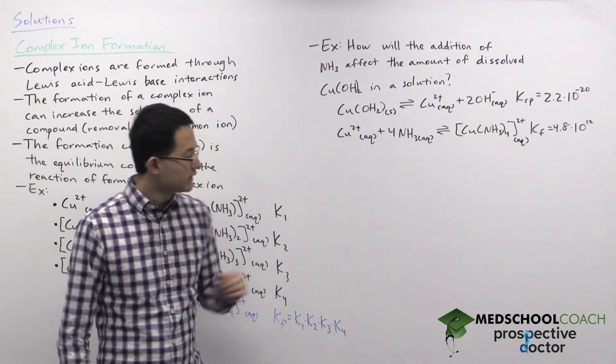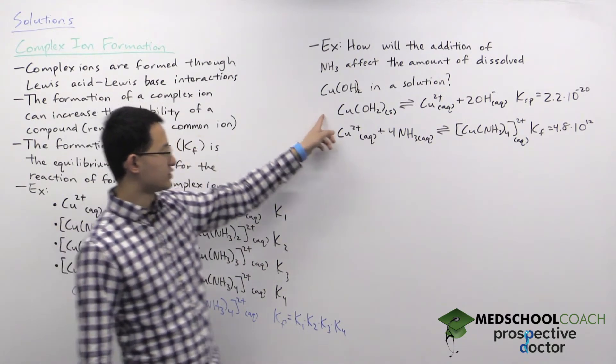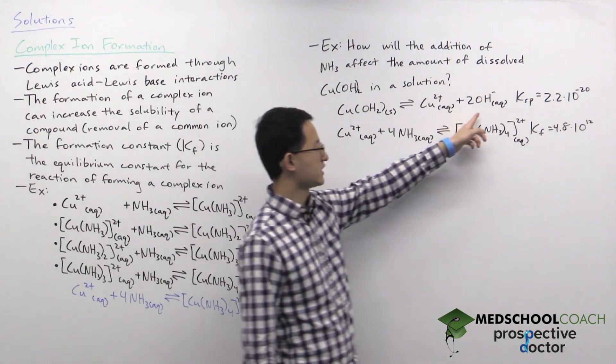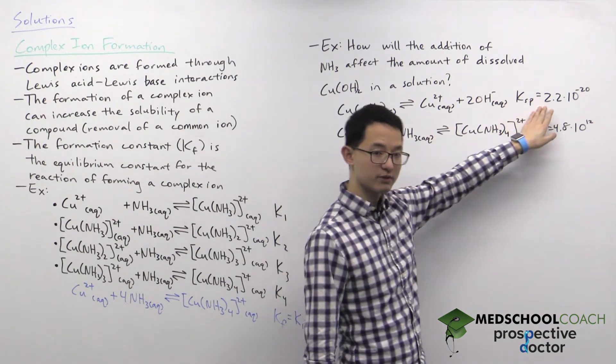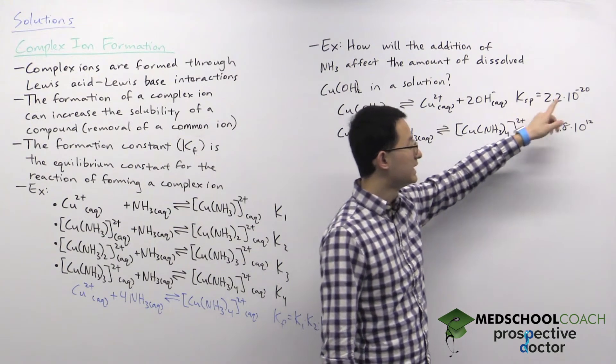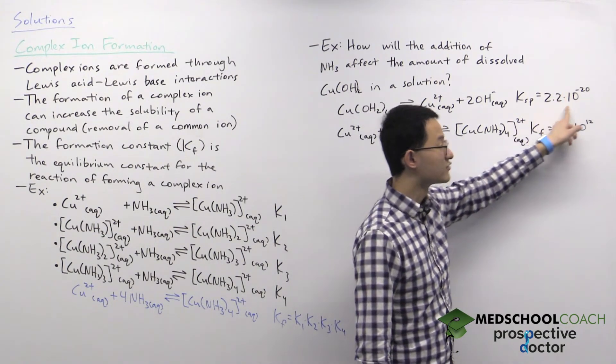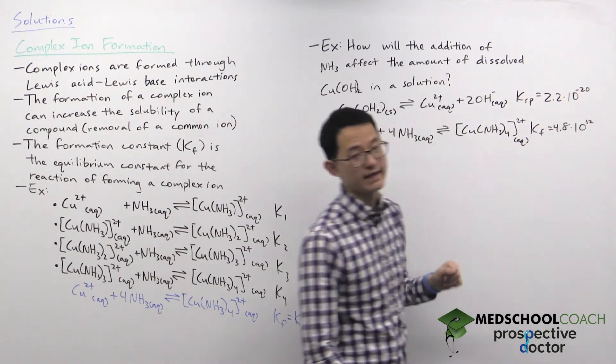Now first we can see that we're given the dissociation reaction for copper hydroxide into copper cations and hydroxide anions and we're given the solubility product constant. The value of the Ksp is really small, 10 to the negative 20.